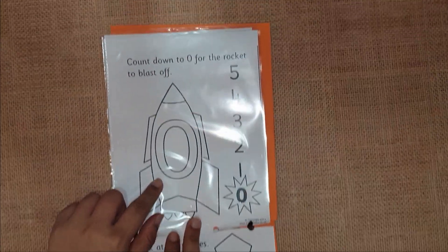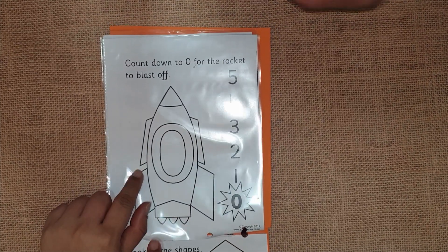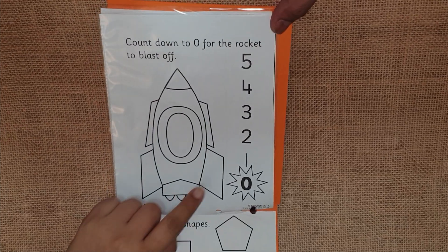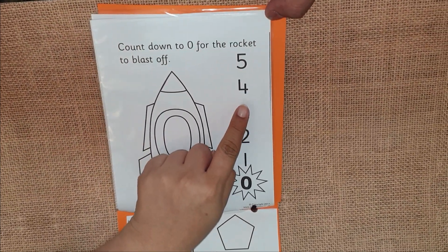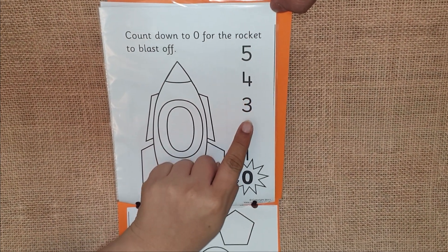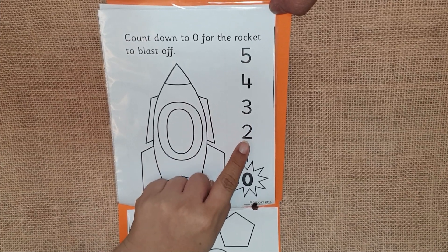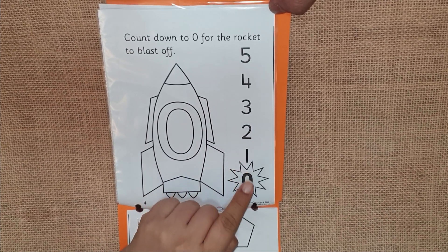Count down to zero for the rocket to blast off. Five, four, three, two, one, zero.